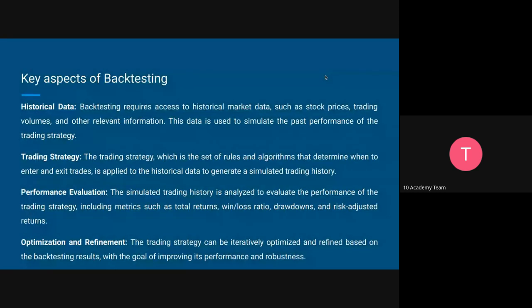What are the key aspects of backtest trading? The first is historical data. It needs historical data relevant to the market — trading market data such as stock prices, trading volumes, and other relevant information regarding the trade. This data is used to simulate the past performance of the trading strategy, so you can make a better decision for the future.